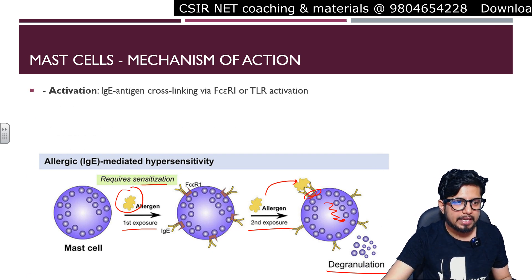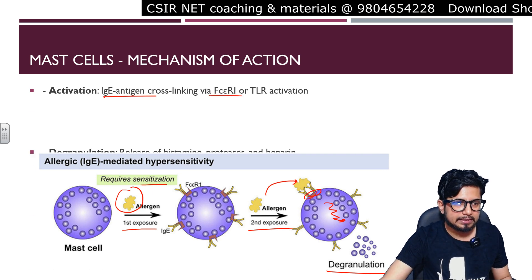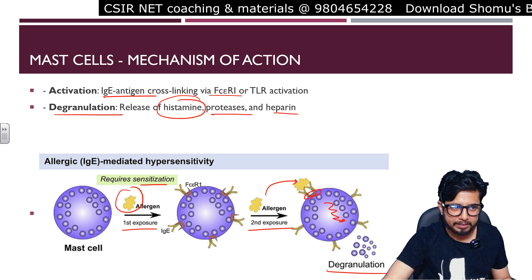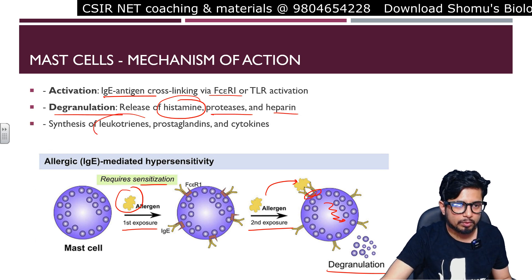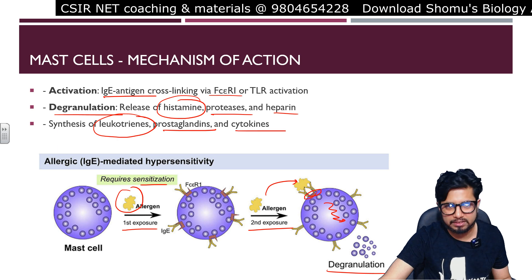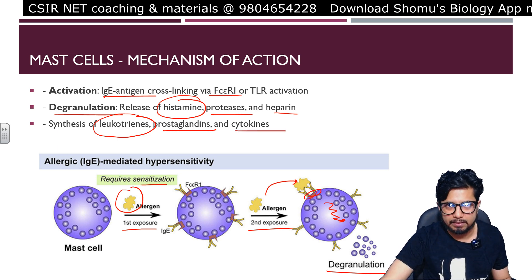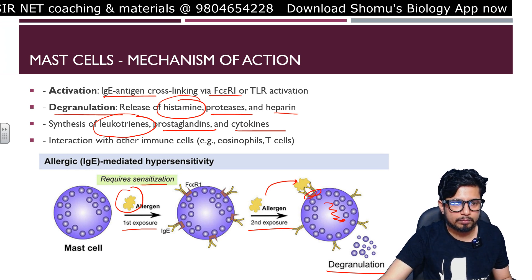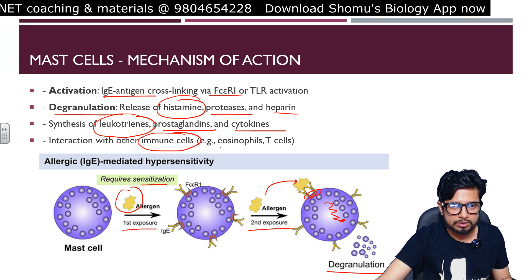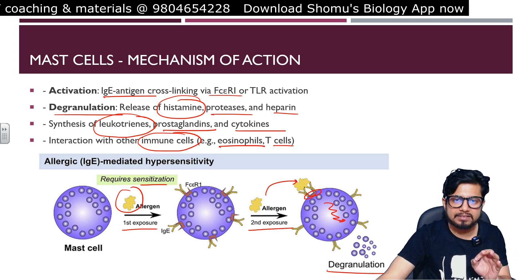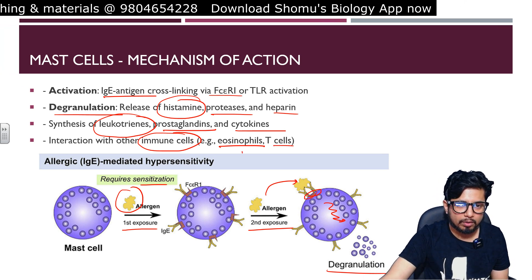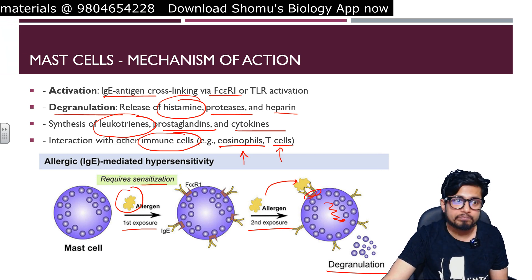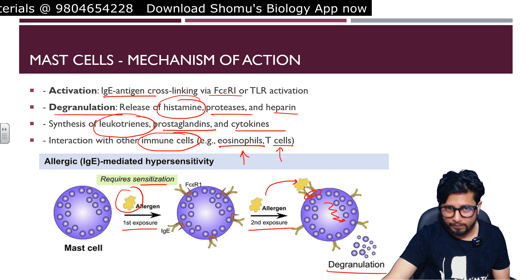Degranulation releases histamine, proteases, and heparin. The mast cell also synthesizes leukotrienes, prostaglandins, and cytokines. This allows mast cells to interact with other immune cells like eosinophils and T helper cells, amplifying the immune response.